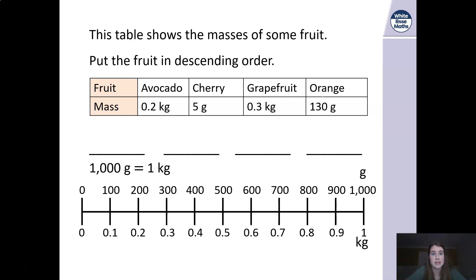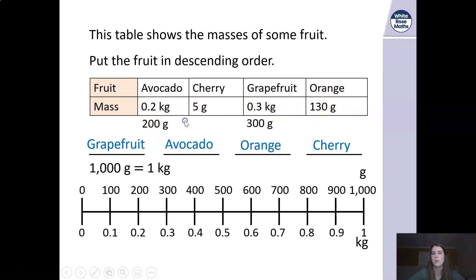Okay so descending order is from biggest to smallest. Remember ascending starts from smallest to biggest, starts in the beginning of the alphabet, ascending goes up. So we're going to have to convert some of these because we've got grams and kilograms. Now because none of them have gone beyond a kilogram it's easier to convert them smaller so they go down to grams. If I convert my avocado, my grapefruit, I've got 205, 300 and 130. So easily my grapefruit is going to be the biggest, the next biggest going to be my avocado, then it's going to be my orange and then it's going to be my one little cherry.